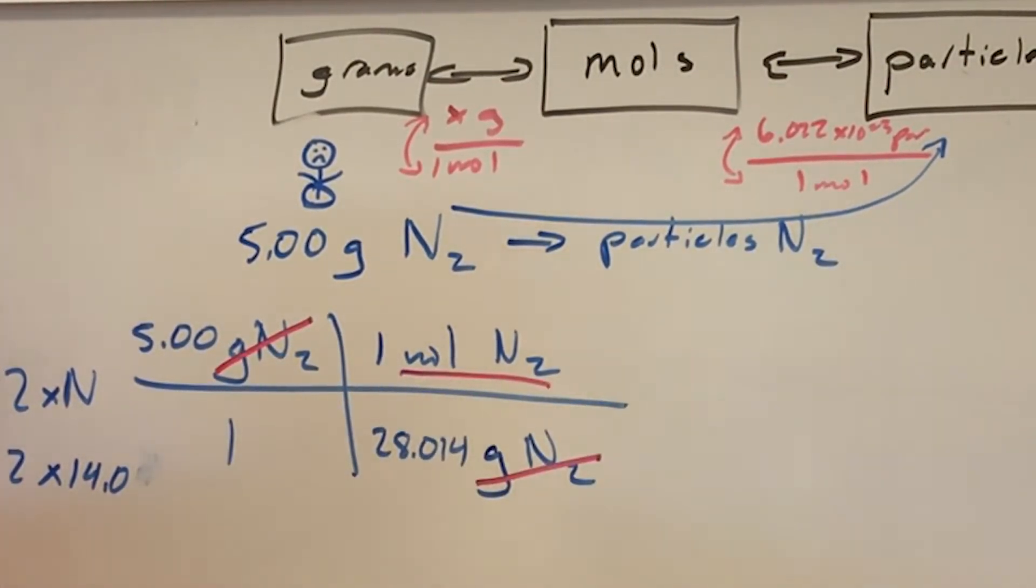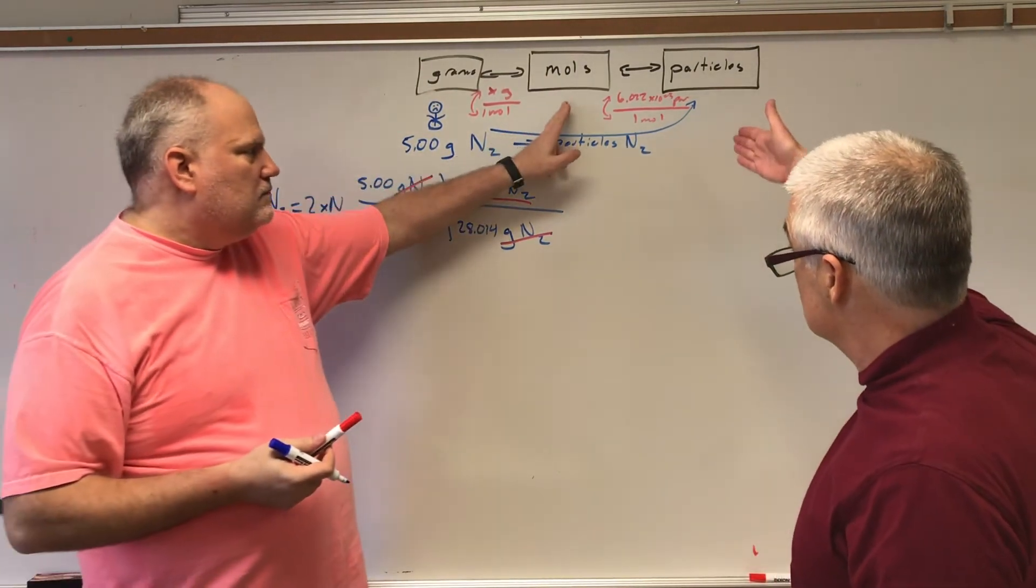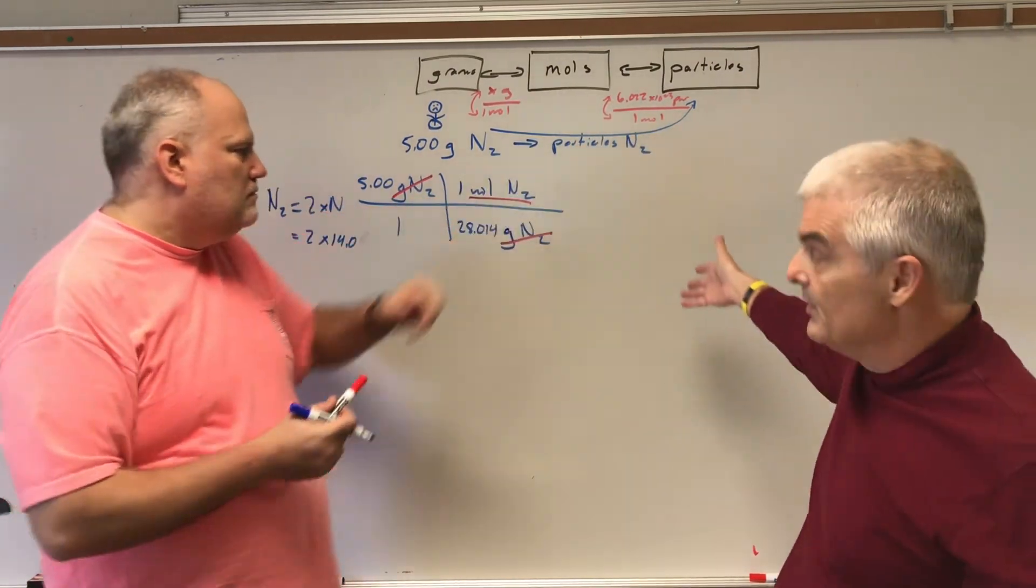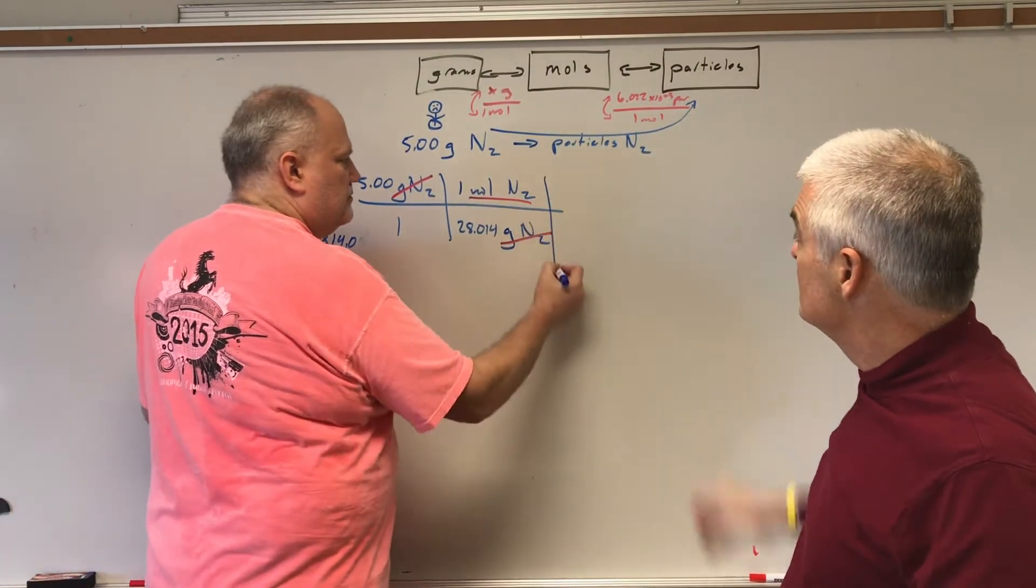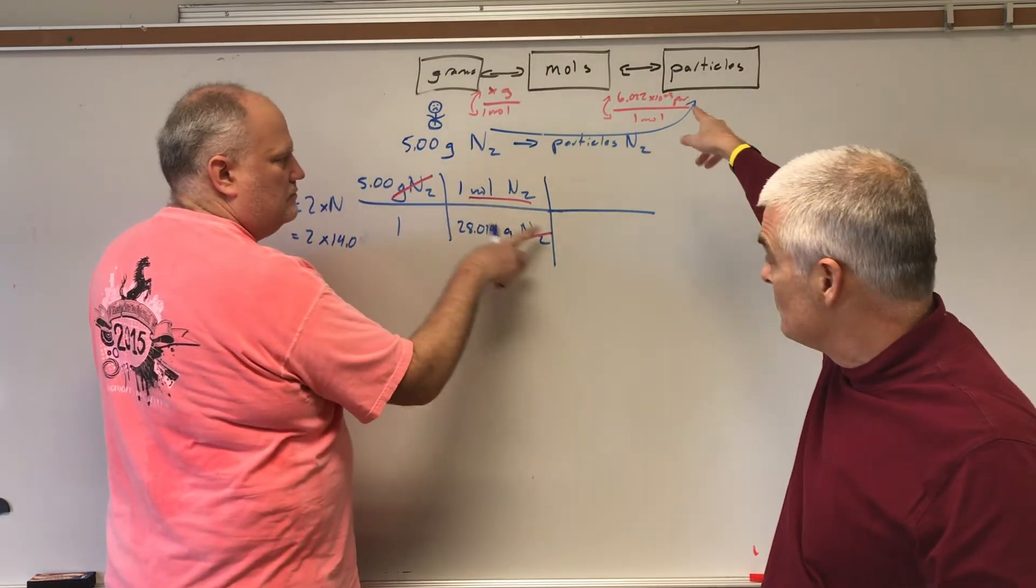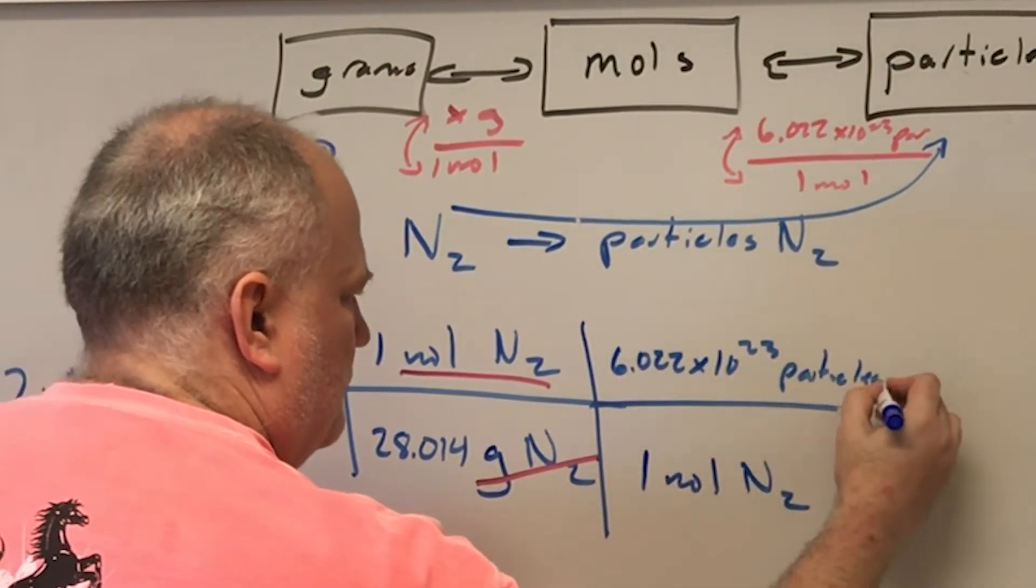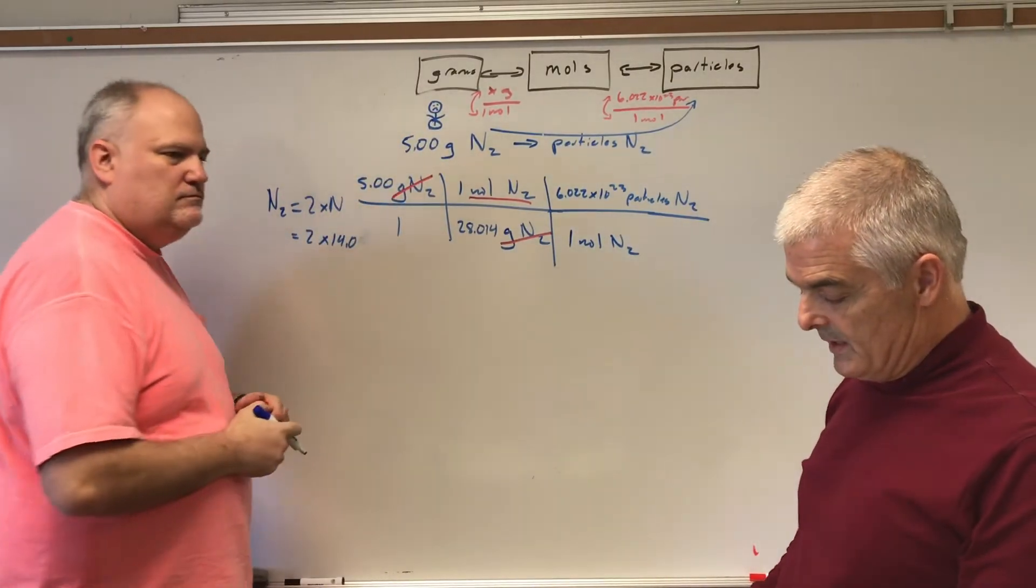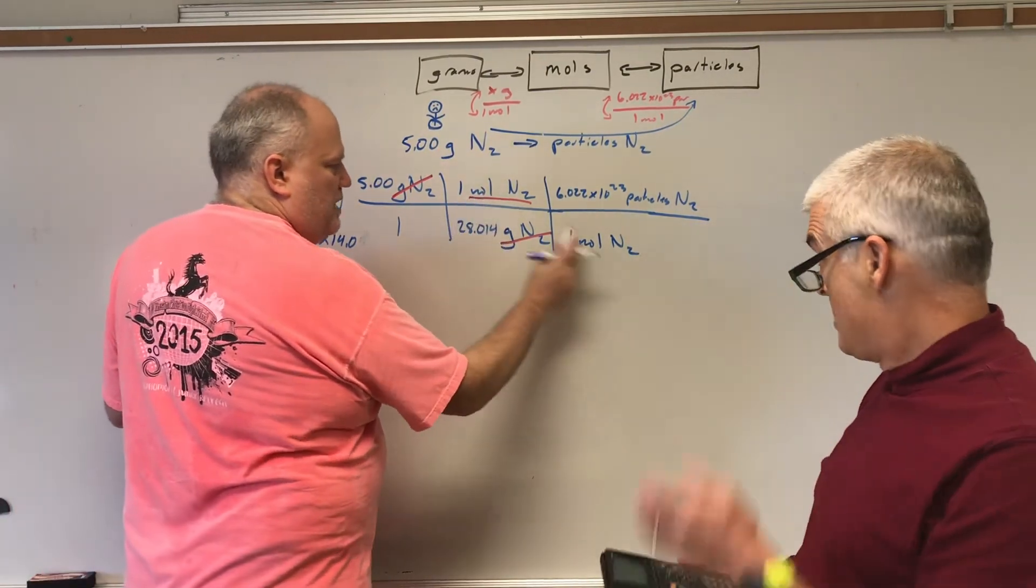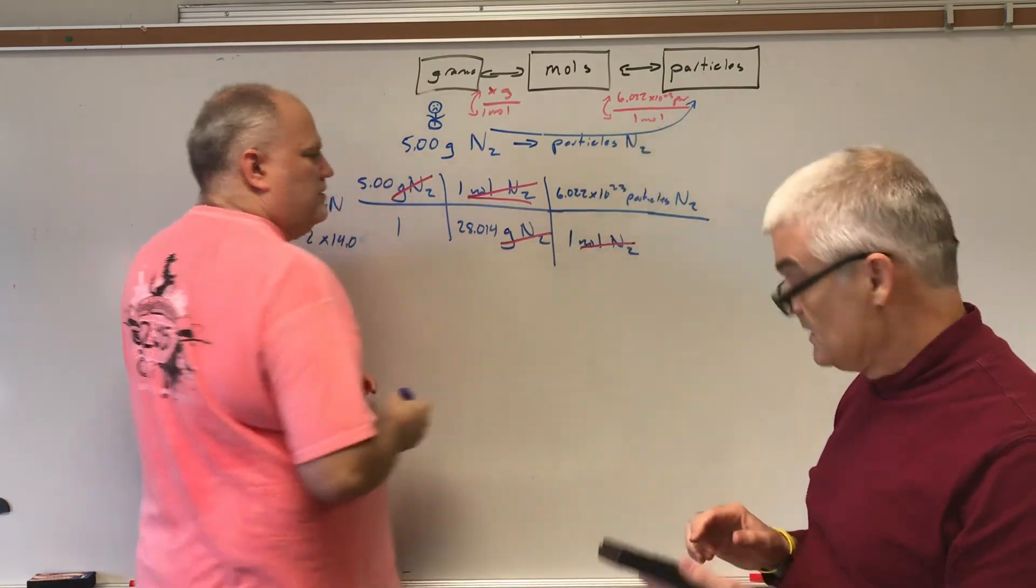But now all I've got is moles. So the next thing is I need to use my next fraction. Do I leave it or do I flip it? In this case, we're going to leave it because we've got moles on top and moles on bottom in the top one. We love to cancel, so we're going to have our moles on the top and moles on the bottom.